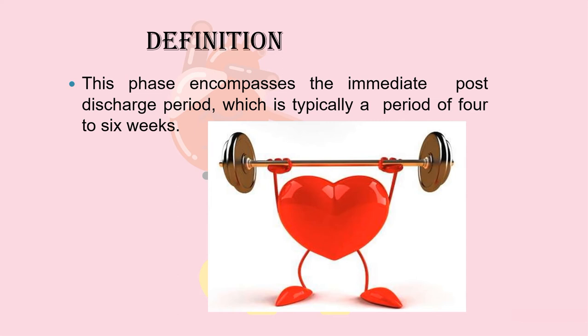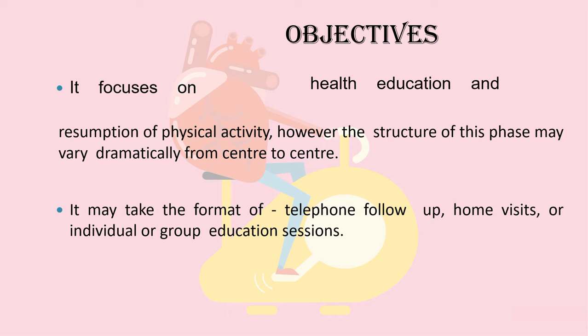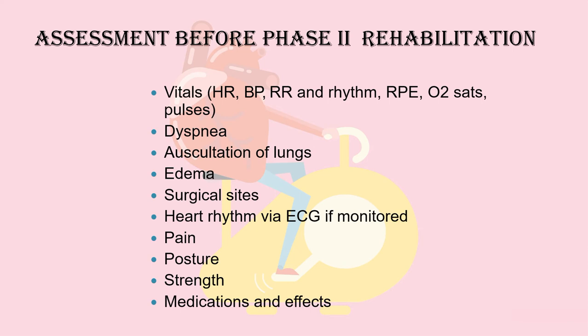Phase 2 is the outpatient cardiac rehabilitation phase. Once a patient is stable and cleared by cardiology, outpatient cardiac rehabilitation may begin. Phase 2 typically lasts 3 to 6 weeks, though some may last up to 12 weeks. Initially, patients undergo assessment focusing on underlying limitations in physical functioning, restrictions of participation secondary to comorbidities, and limitations to activities. It may take the format of telephone follow-ups, home visits, or in-person evaluation sessions.